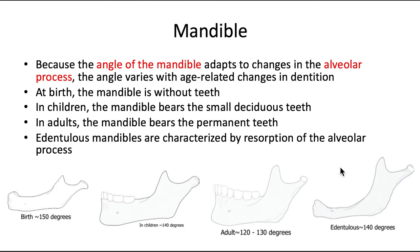Edentulous mandibles are characterized by resorption of the alveolar process and remodeling of the mental foramen, and the whole bone kind of reverts to a more infant-like mandible, with the angle increasing back to 140 to 150 degrees. These exact degrees aren't something you have to memorize since it varies from individual to individual, but that's the general trend based on how the angle adapts to changes in the alveolar process.